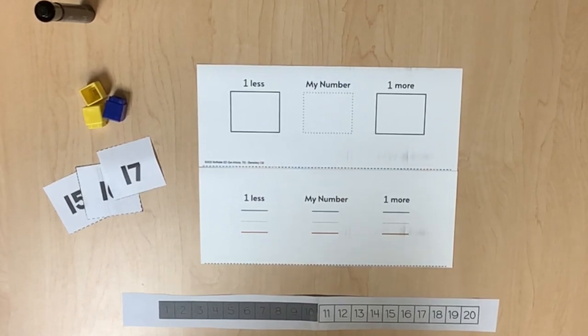Students continue to use the number path to generate numbers that are one more than or one less than a given number. Review what it means to generate numbers that are one more than or one less than a given number.